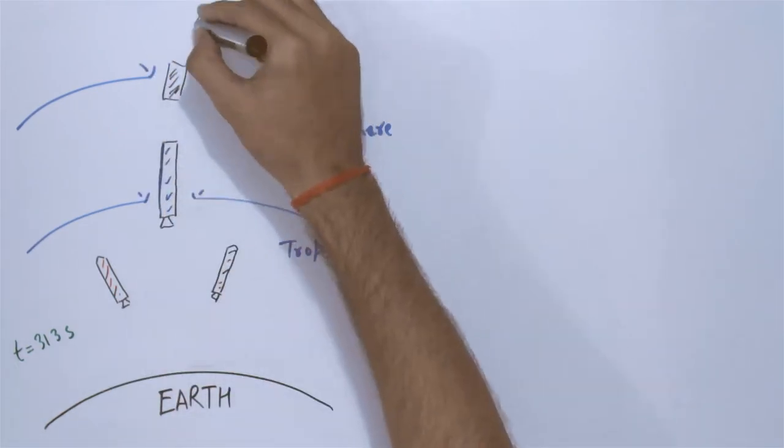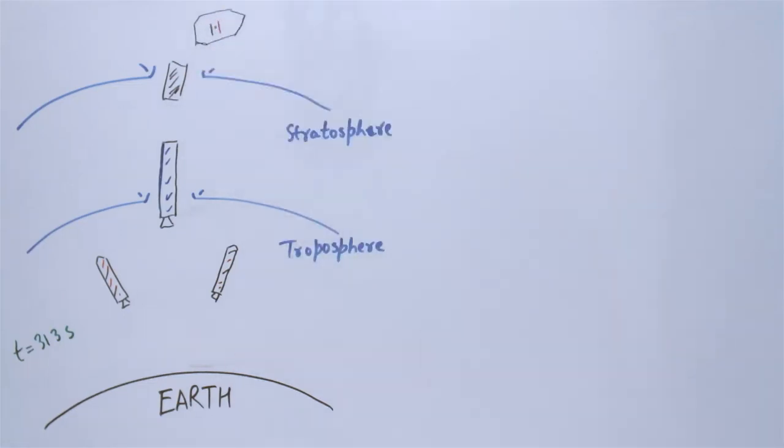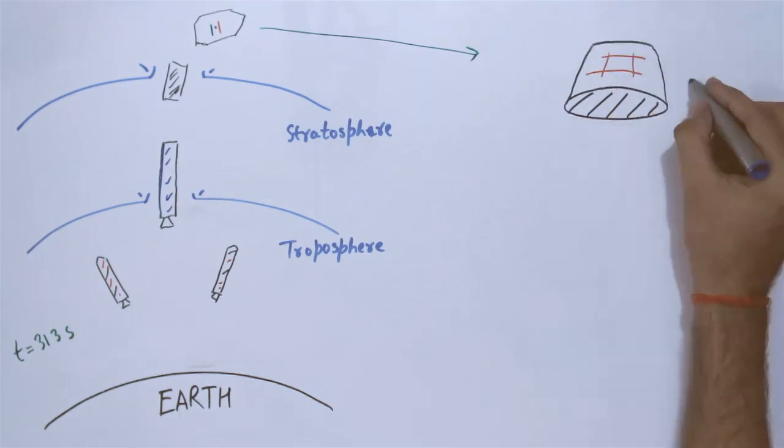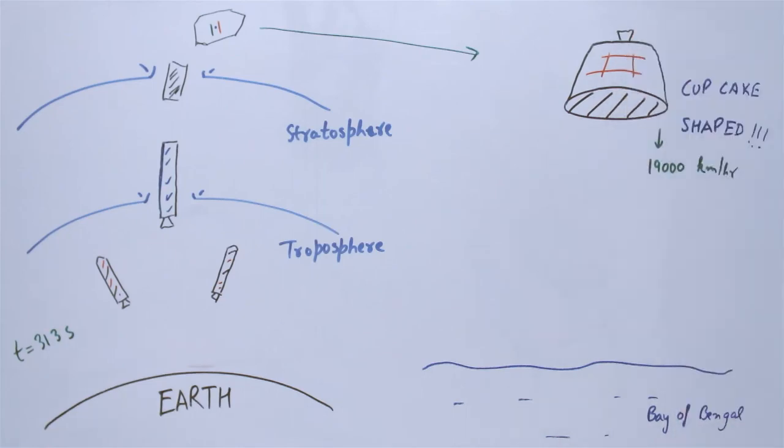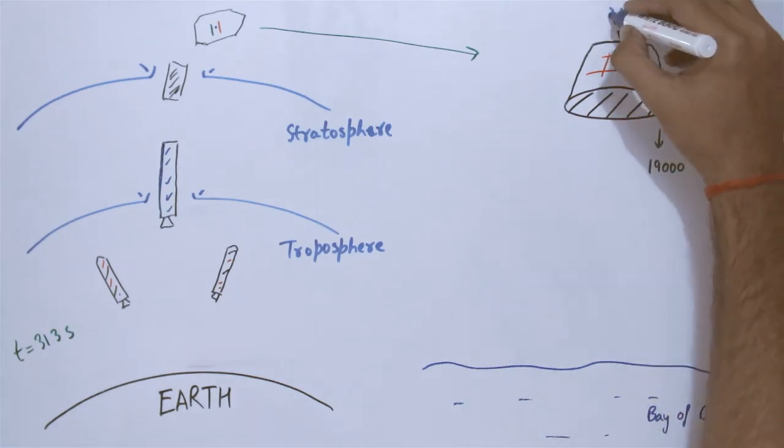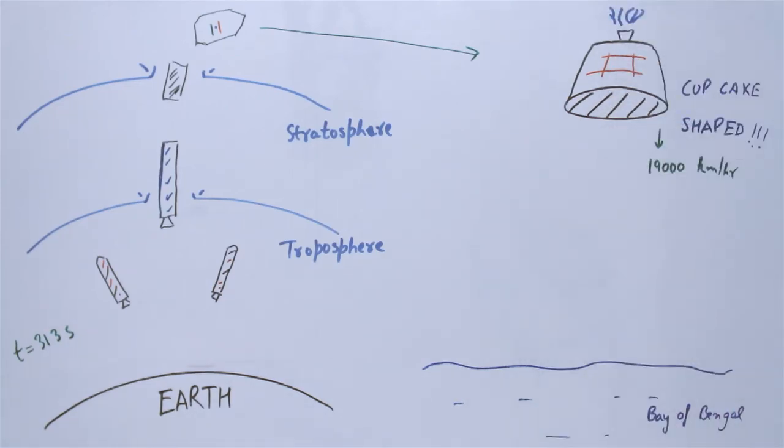The rocket drops the module from a height of 126 kilometers and explodes at a safe distance. The module, on the other hand, huddles towards the ocean at a velocity of 19,000 kmph. The six liquid propellant thrusters on the module turn on and adjust the fall angle before entering into the atmosphere.